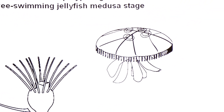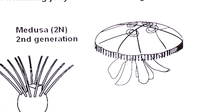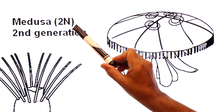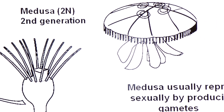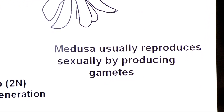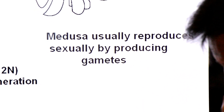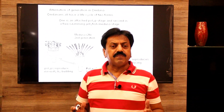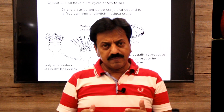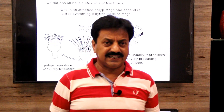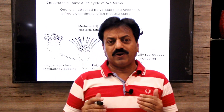The second stage in the life cycle is the jellyfish-like medusa stage, which is also diploid — the second generation. Medusa usually reproduces sexually by producing gametes: sperm and egg. So in the life cycle there are two generations — the polyp stage and the medusa stage — and both generations are diploid.